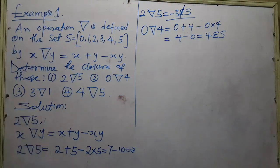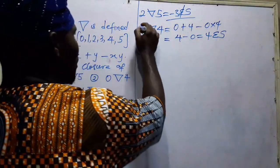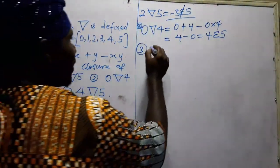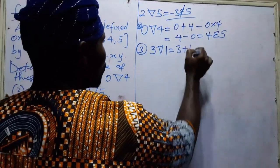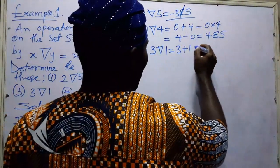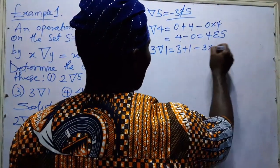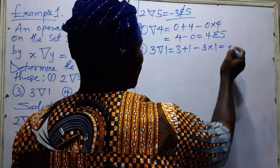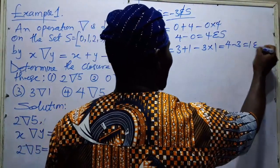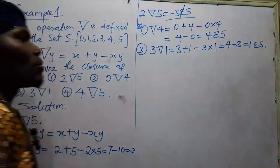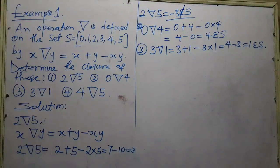Let's also check number three: three operation one. Using the operation: three plus one minus three times one equals four minus three, which equals one. One is an element of X. So since one is an element of X, three operation one is closed.